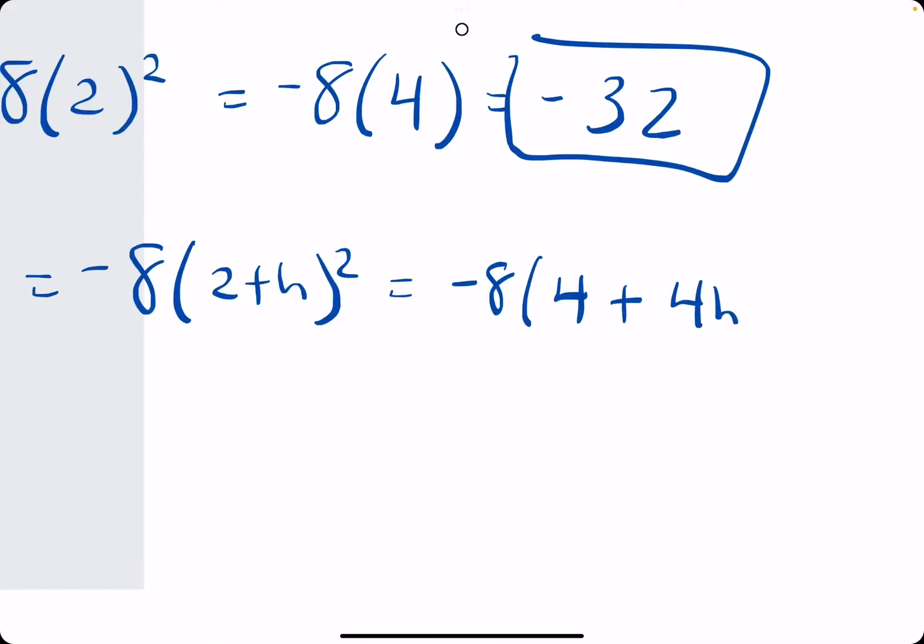4h, and then plus h squared. Distributing the 8, the negative 8, gives us negative 32 minus 32h minus 8h squared.